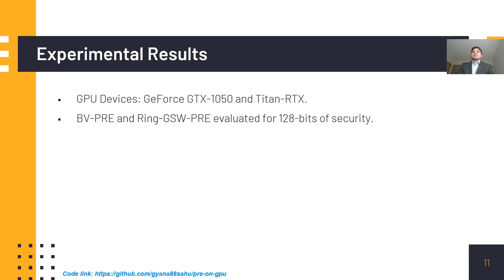Let's look at the experimental results. We used two GPU devices: the GTX 1050 and the Titan RTX. The GTX 1050 is a low-end commodity-grade laptop GPU with 640 cores, while the Titan RTX is a powerful GPU with 4608 cores, typically found on HPC clusters. We instantiated our BVPRE and RingGSWPRE scheme parameters for 128 bits of security with ring dimensions ranging from 512 to 16384. Fortunately, we could stay within 29 bits of modulus, which fits nicely into the 32-bit integer size of the NVIDIA architecture.